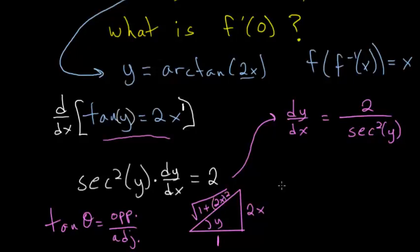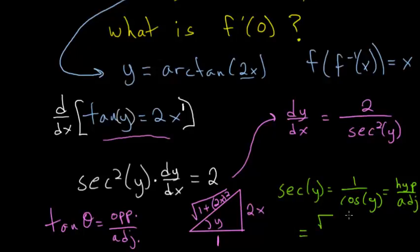And so the secant of the angle y, which is the same thing as 1 over the cosine of the angle y, is equal to the ratio of the hypotenuse to the adjacent side. And since the hypotenuse is the square root of 1 plus 4x squared, and the adjacent is just 1...